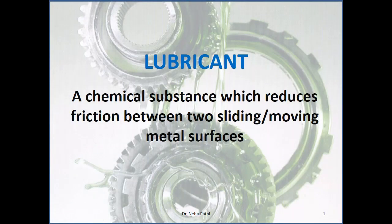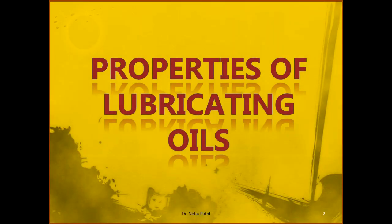Today we will discuss one more property of a lubricant. A lubricant is that particular chemical which we use in order to reduce the friction between two metallic surfaces. In the properties of lubricating oil — specifically liquid oils — we are going to discuss the property called flash and fire point.